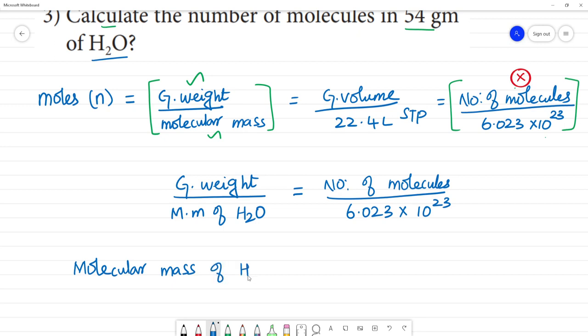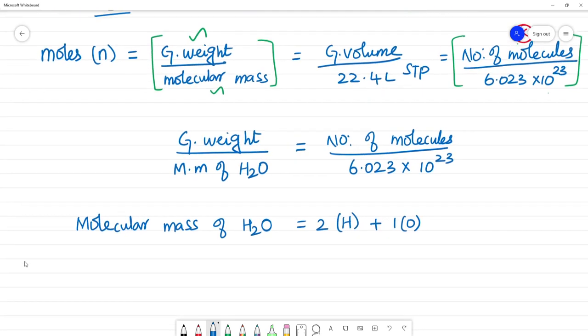Molecular mass of water, H2O, is 2 hydrogen plus 1 oxygen. That is 2 into 1 plus 1 into 16, equals 2 plus 16, equals 18 grams. So molecular mass is 18 grams.